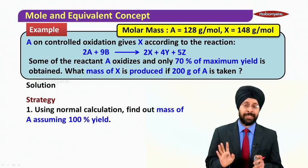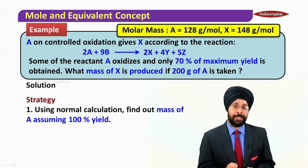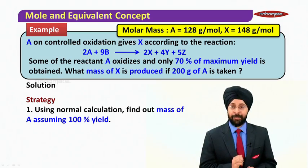First of all, let us do a normal calculation. Let us think that it is 100% yield and let us find out how much mass of X we can produce.